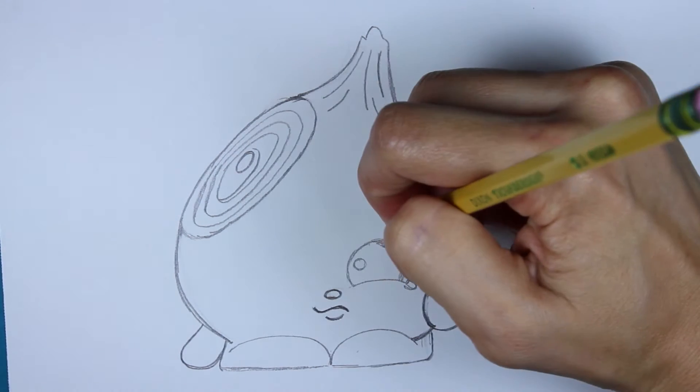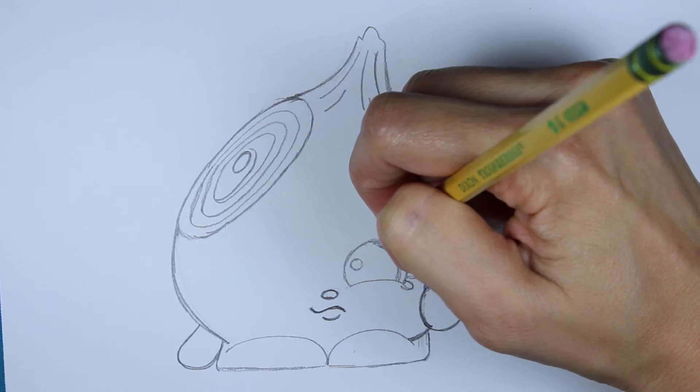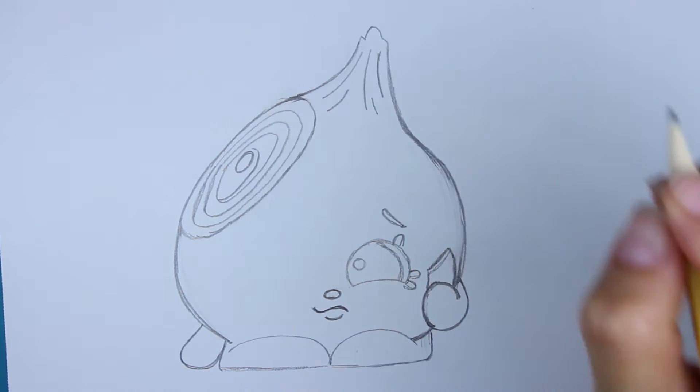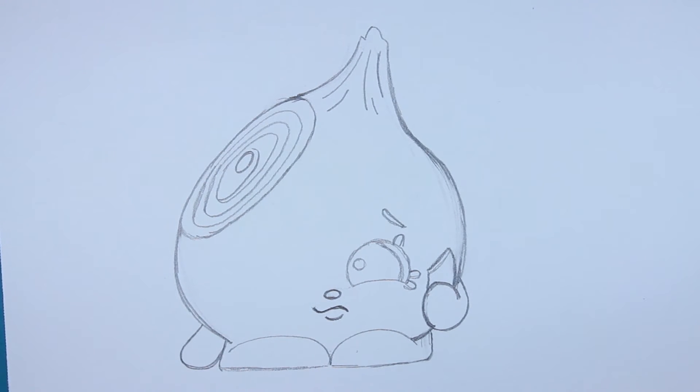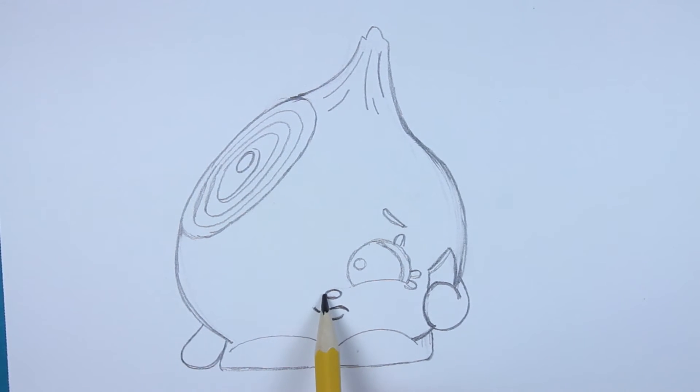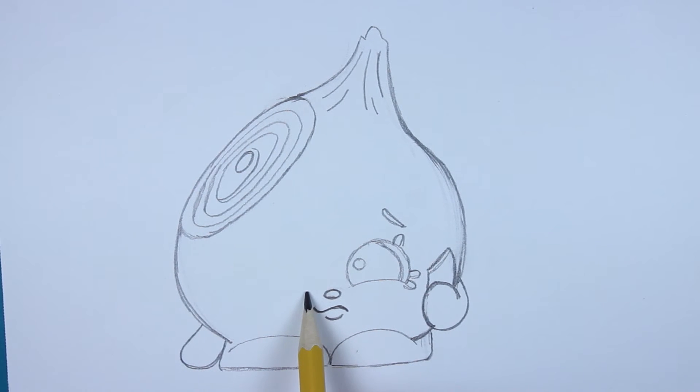And then over here, we're going to make a comma looking shape for the eyebrow. Like that. And then we will work on the next eye. So we'll leave a little bit of a space. Make a curved line.